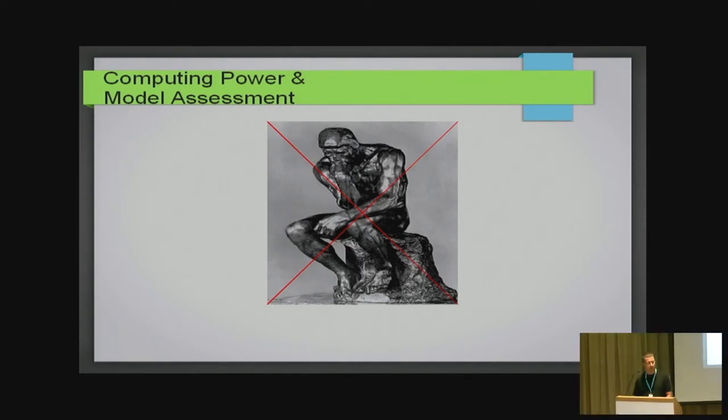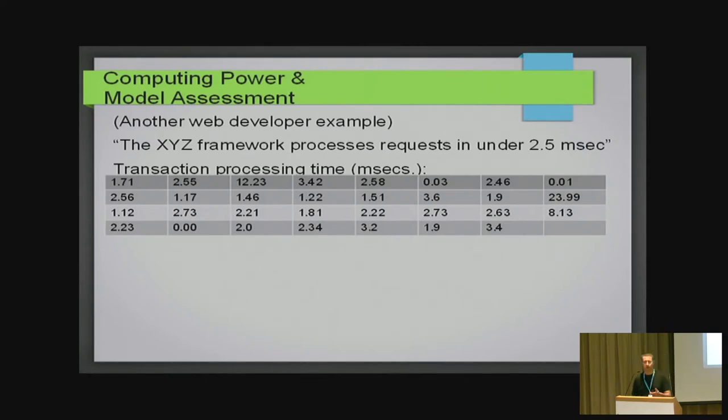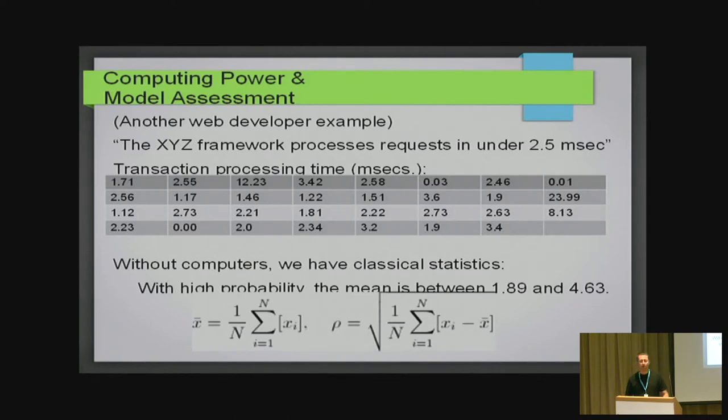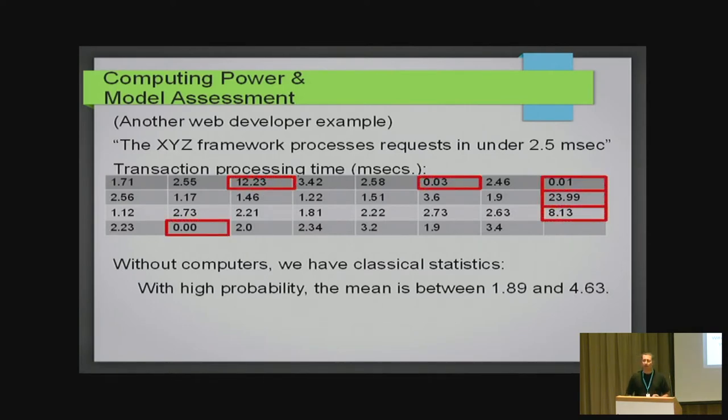And the opportunity we have has to do with model assessment. We hear about the great XYZ framework which can process transactions very quickly. It's supposed to process some very complicated transaction in less than two and a half milliseconds. So, we get access to 30 websites running it. And statistics which was developed before computers has closed formulas for the mean and the standard deviation.